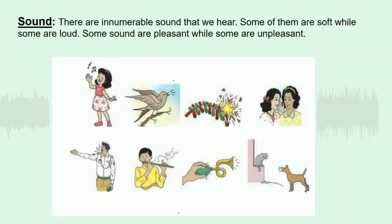Sound can be of different types such as soft, loud, pleasant, and unpleasant. Some sounds are loud and clear, heard easily, while some others are very soft and cannot be heard unless we listen attentively. We like some sounds; on the other hand, we get annoyed by some other sounds.